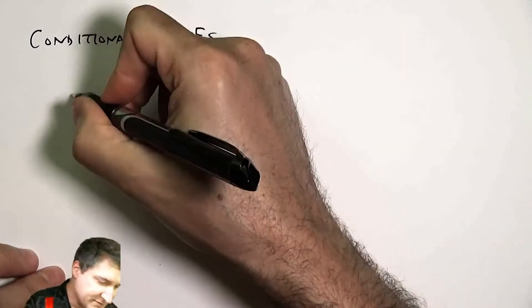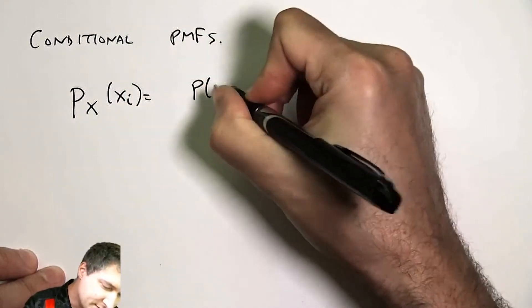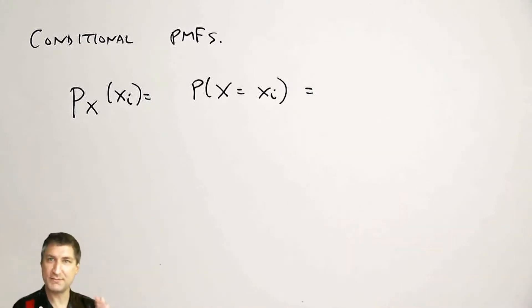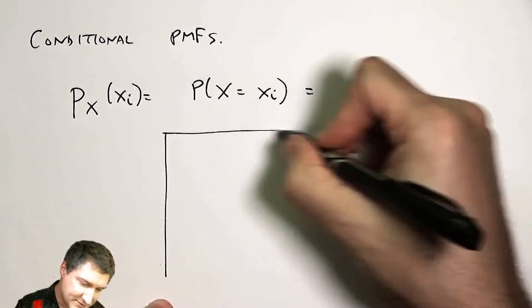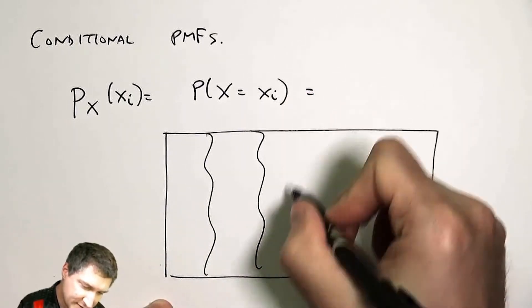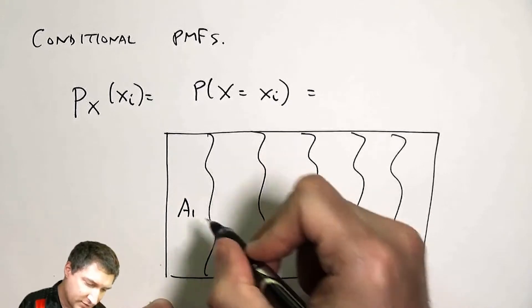Remember what our definition of a PMF was. It's the probability that a random variable takes on a certain value. If you think about what's going on in the underlying sample space, I've got a bunch of outcomes.